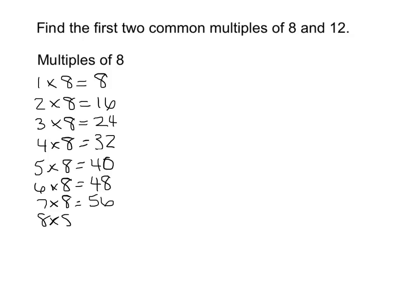8 times 8 equals 64. And 9 times 8 equals 72. And 10 times 8 equals 80. So that will get us started. Now let's look at some multiples of 12.